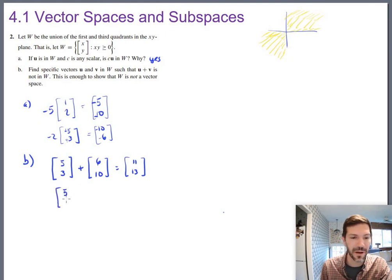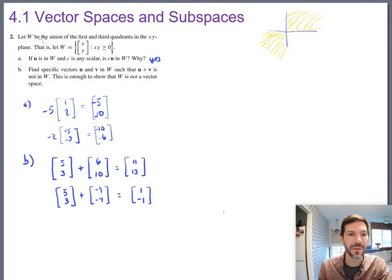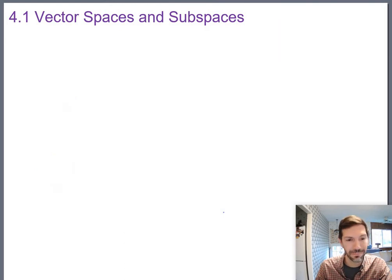Let's get 5, 3, plus negative 4, negative 4. This is a vector from W. That's a vector from W, third quadrant. When I add them together though, I get 1, negative 1. Oh, and that's in the fourth quadrant. That is not closed under addition, because I added two vectors from W together, and got a vector that was outside of W. Okay, so W is not a vector space. Failed closure under addition.